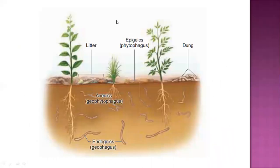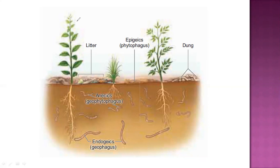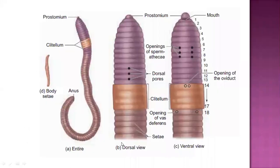The color of the earthworm — on the dorsal side it gives a purplish color, but the ventral side is somewhat pale in color. At the anterior end you can see the segments, the annular rings, and the prostomium. We have discussed this before and will discuss in detail.